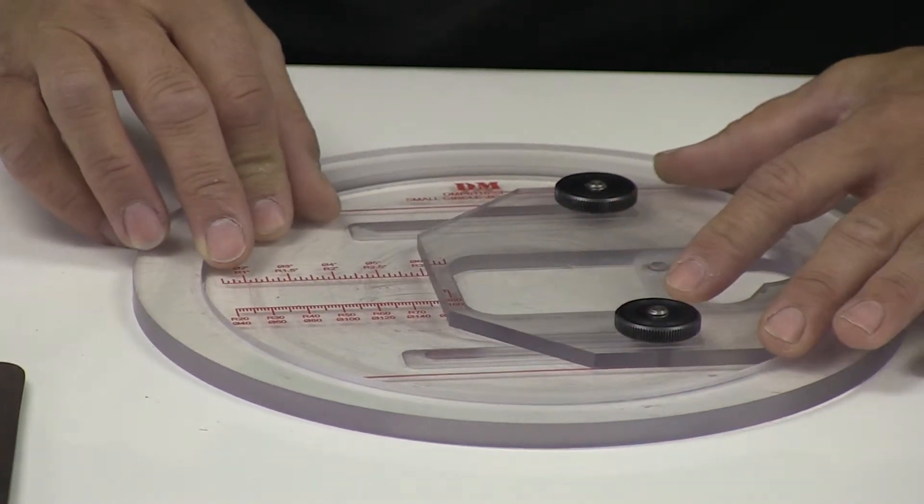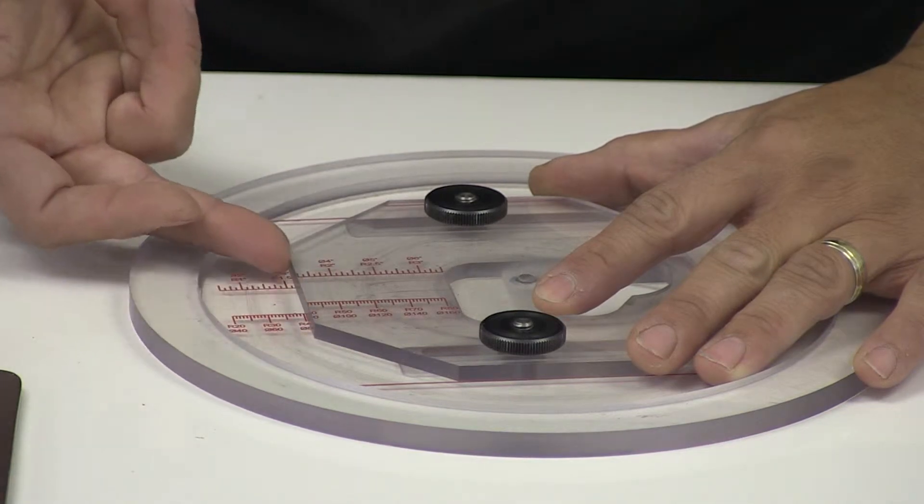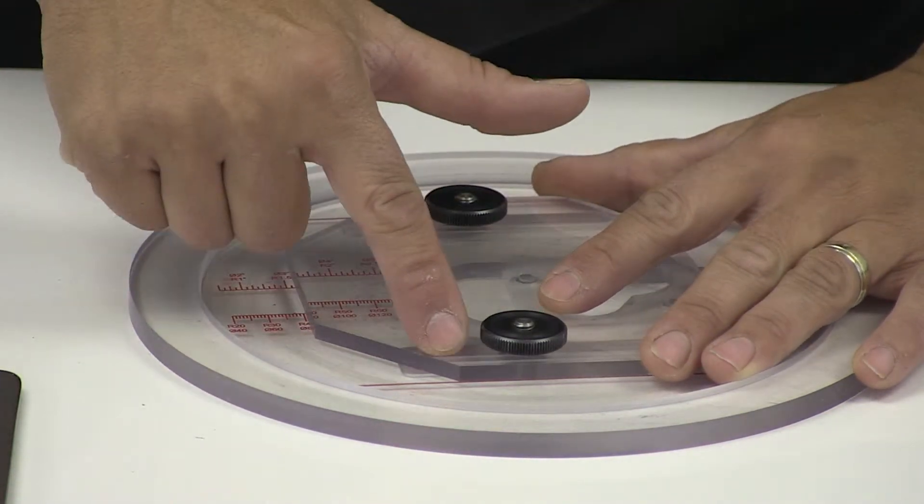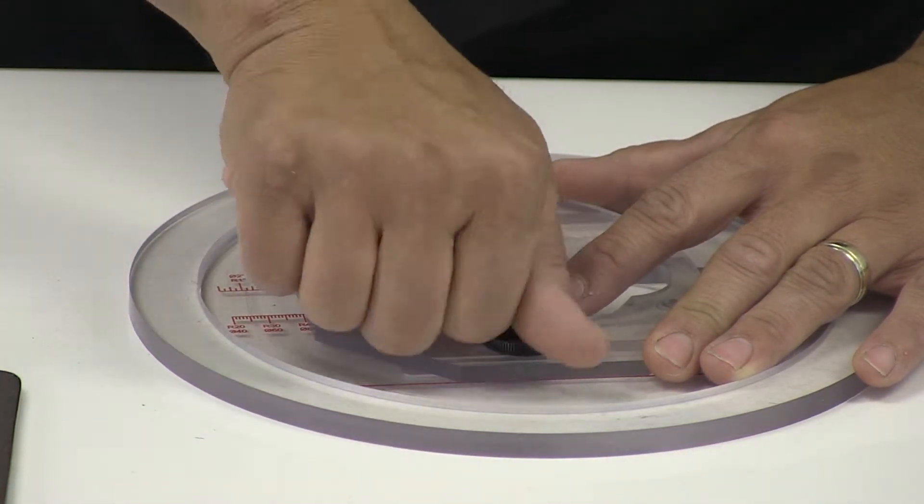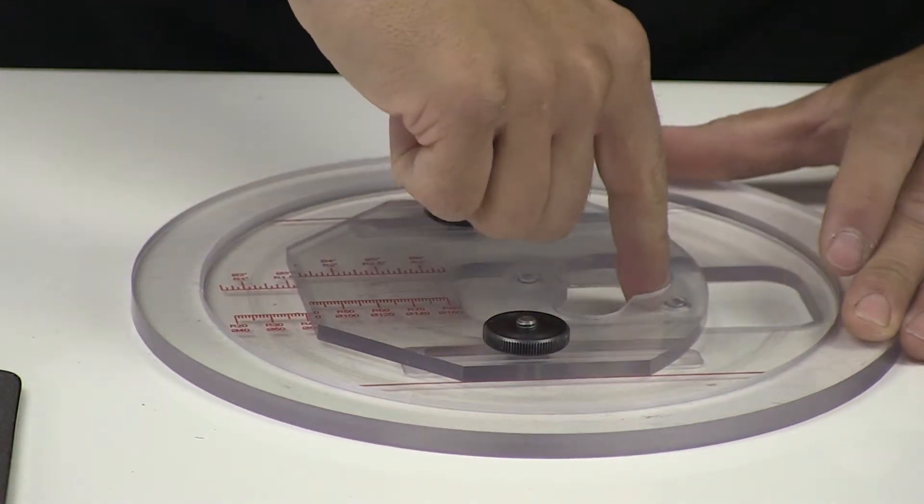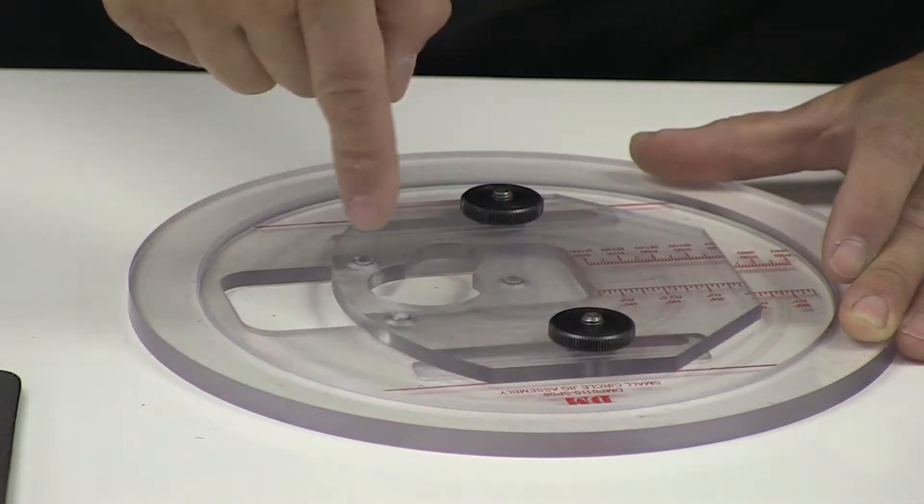And when you're setting the jig, you basically slide it into the position you want using this straight edge. You align the top and bottom parallel marks, and that gives you the diameter that you actually want to cut, so you can rotate the tool to pick up the whole size you need.